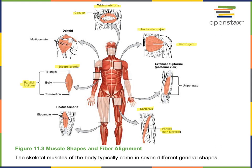A pennate fascicle arrangement means that the fascicles are oriented diagonally onto a tendon. A unipennate fascicle arrangement has all of the fascicles on one side of a long tendon. An example is the muscle extensor digitorum, found on the posterior antebrachial region. Having this unipennate arrangement enables this muscle to be very forceful even though it doesn't need to produce a wide range of movement to extend the digits or extend the metacarpophalangeal joints.